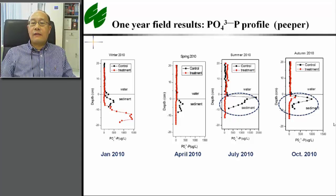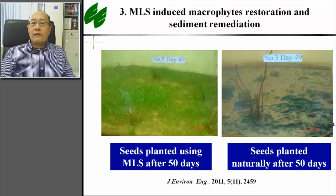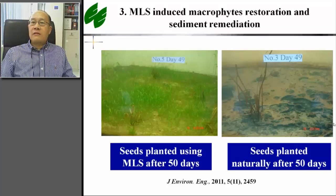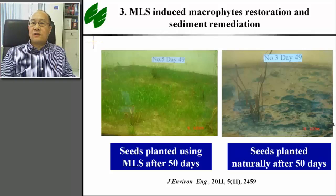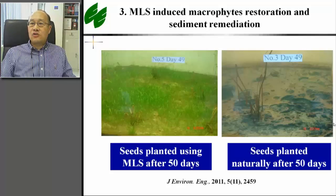The third function of MLS technology is submerged vegetation restoration. This slide shows the comparison results in a simulated system in a laboratory. Seeds planted in algal waters died because of the bad water, light, and sediment conditions. The bad conditions can be lifted by the MLS treatment, which leads to the successful growth of the submerged vegetation.